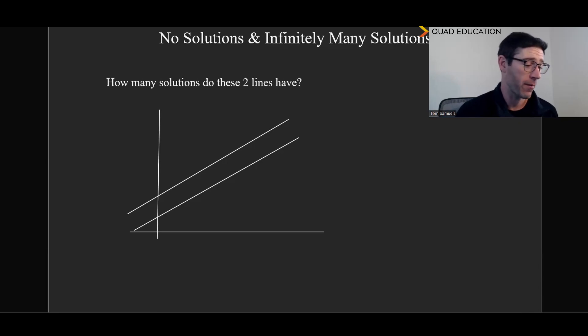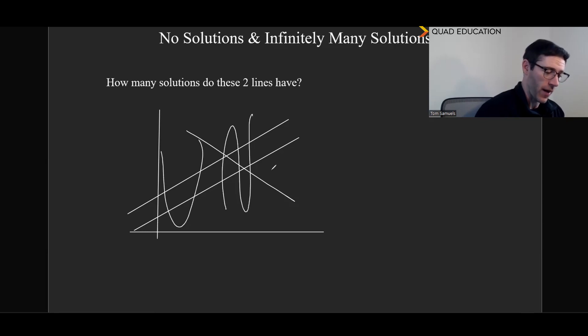Then the next question is, what would happen if there were infinitely many solutions? So no solutions look like this. One solution would look like that. Two solutions would look like that. Three solutions might look like that. And so with infinitely many solutions, what that would look like is a line that intercepts at every single point. In other words, the same line.